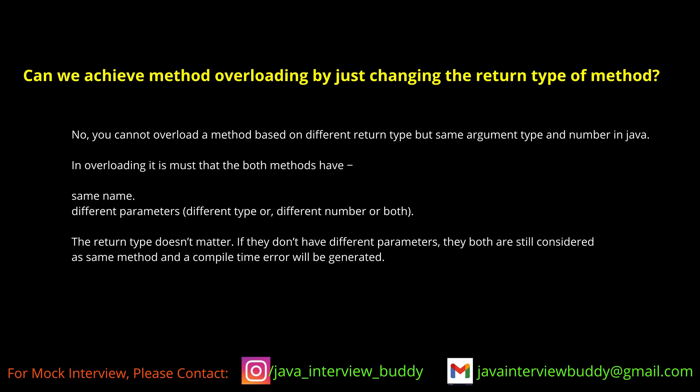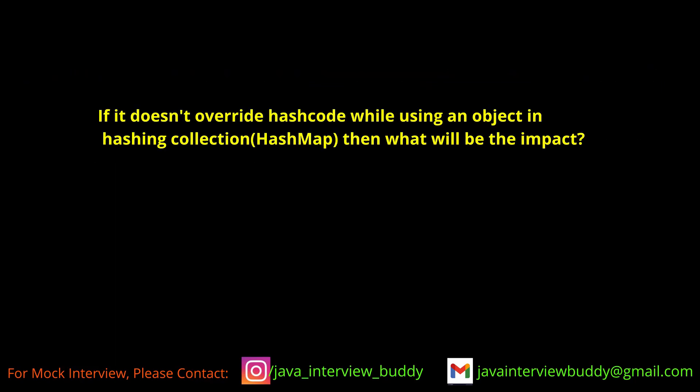In overloading the return type can be different. But in overriding we can have a covariant type — for example, if the parent method returns Object, the child can return String, because String is a child of Object. Covariant types can be used in overriding.